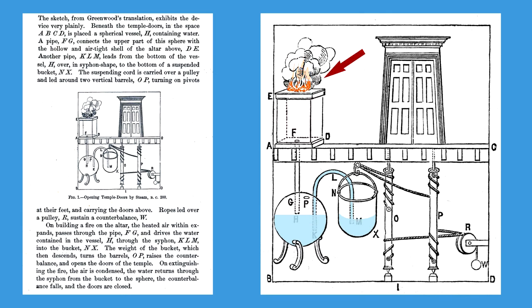The heat from the altar fire warms the air in the air chamber, increasing its pressure and the pressure in the water chamber below. This increase in pressure pushes water out of the water chamber, through the siphon tube, and into the open bucket, increasing the bucket weight.